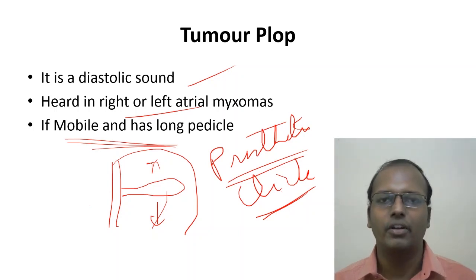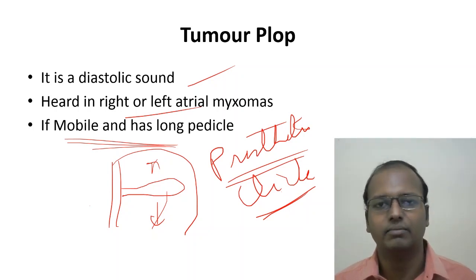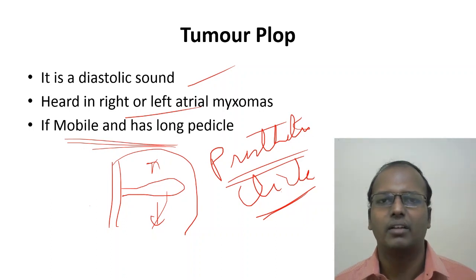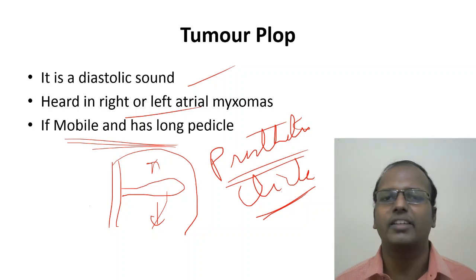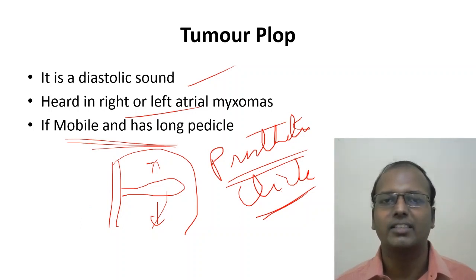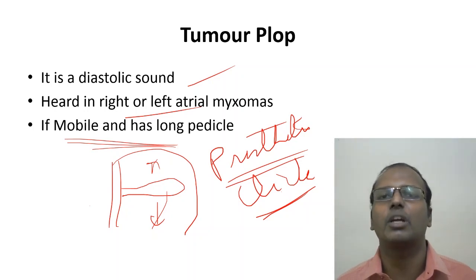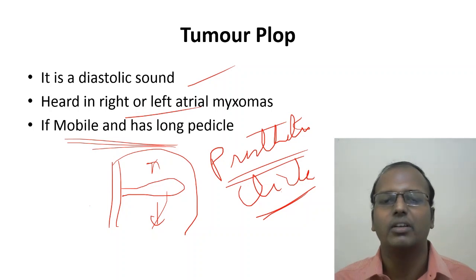We have now covered all heart sounds: S1, S2, S3, S4, pericardial knock, clicks, ejection click, opening snap, and tumor plop. In auscultation, you must comment on whether P2 is loud, whether there is splitting, and whether any split is normal, non-splitting, or abnormal. These are very important points for examination. Now moving on to cardiac murmurs.